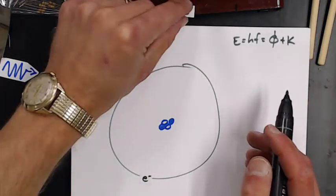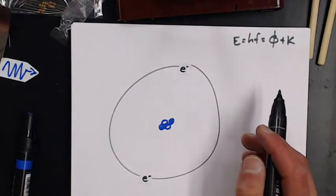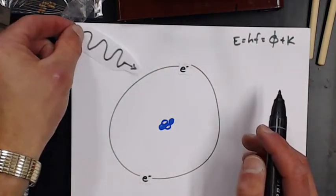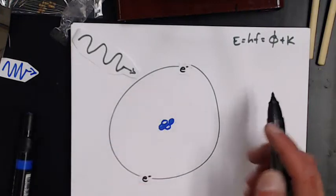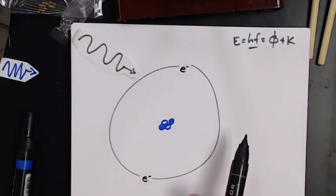If I send in a lower energy photon, such as this green one, it doesn't get knocked off - it doesn't have this much energy. But what happens?